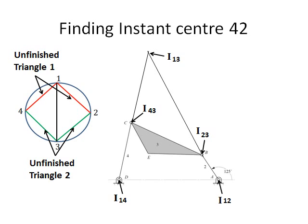To construct the last center, we go back to the circle diagram and look at the lines that have been drawn. We want to draw a line that will complete two unfinished triangles. By drawing a line from tick mark 4 to tick mark 2, two triangles are formed. The first triangle uses the line between tick mark 4 and tick mark 1, and the line between tick mark 1 and tick mark 2. The second triangle uses the line between tick mark 4 and tick mark 3, and the line between tick mark 3 and tick mark 2. This line represents instant center I42. To draw its location, we extend the line between I41 and I12, and also extend the line between I43 and I32. The intersection of these two lines denotes the instant center I42.